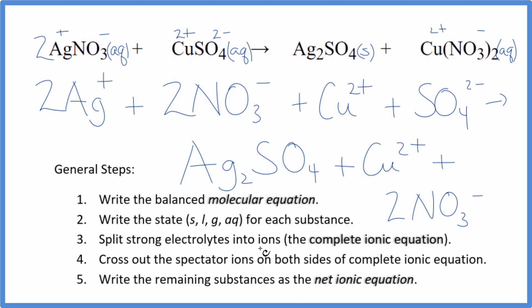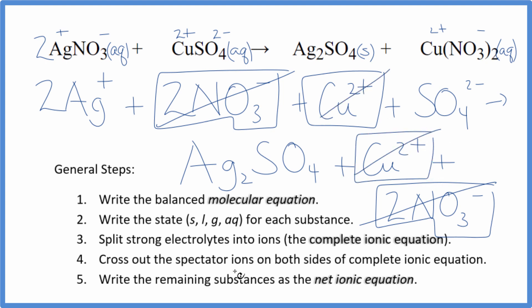Now we're going to cross out the spectator ions. They're on both sides. I see that I have two nitrates here in the reactants. In the products, I also have two nitrate ions. These are spectator ions. We can cross those out. I have copper 2 ion. I also have that in the products. That's the spectator ion. Cross it out. What's left, that's the net ionic equation here for AgNO3 plus CuSO4.